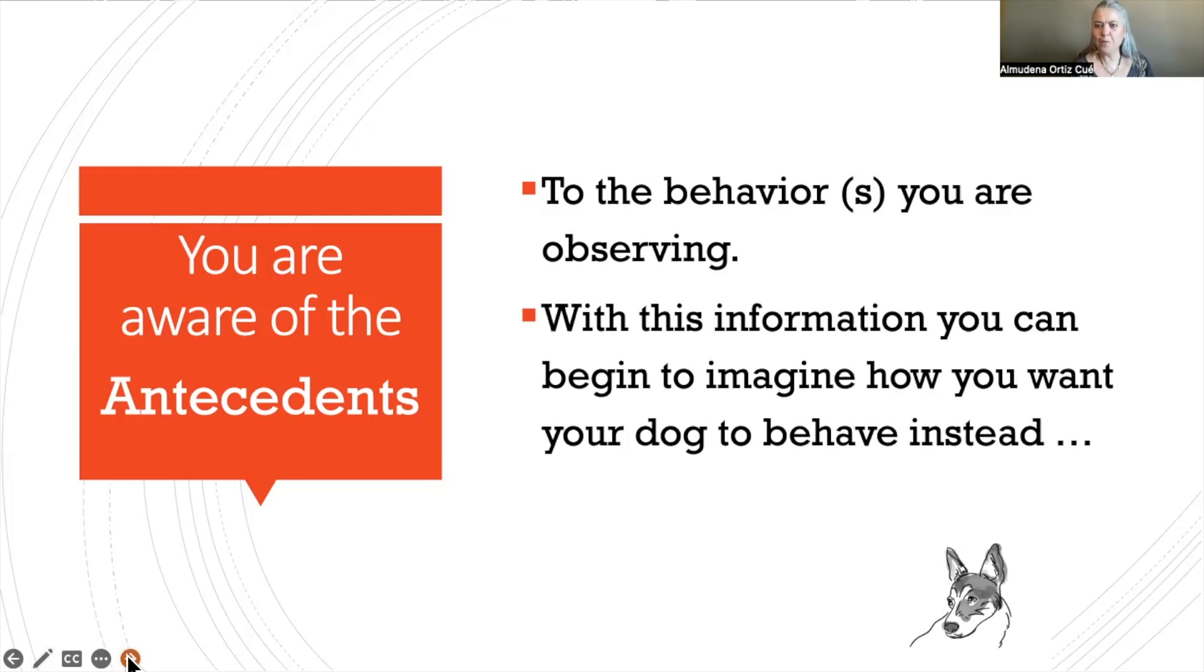With this information now, what the dog is doing specifically, and hopefully the context, what happened before the dog started to lunge, bark, or whatever the behavior might be, we can begin to imagine what is it that we want the dog to do instead. What is acceptable to us?